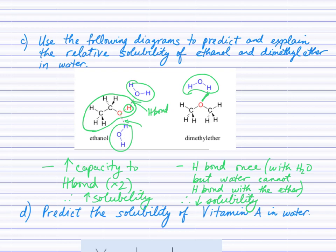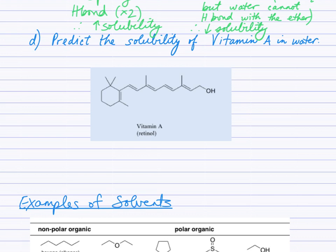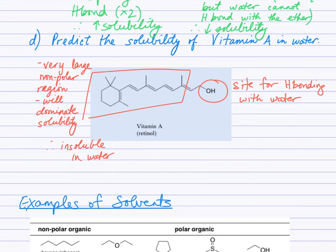Looking at vitamin A, also known as retinol: it's a large molecule. The OH on the far right is the site for hydrogen bonding with water. Scanning the rest of the molecule, there are no other polar bonds and no other OH bonds. With just one site for hydrogen bonding in this large molecule and a very long non-polar region, the non-polar region will dominate its properties, and we expect vitamin A to be insoluble in water.